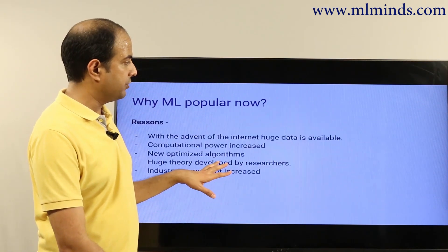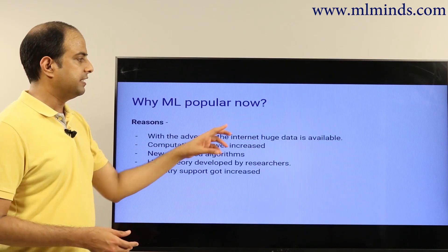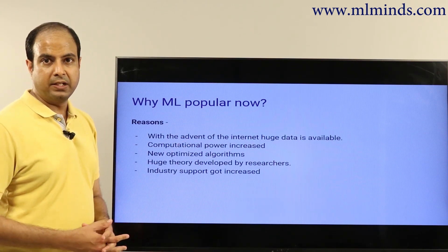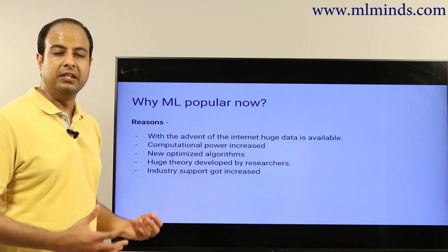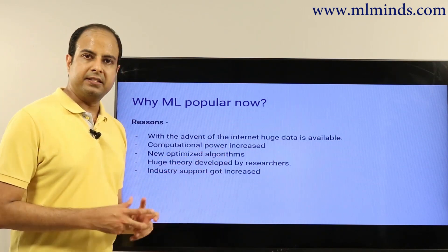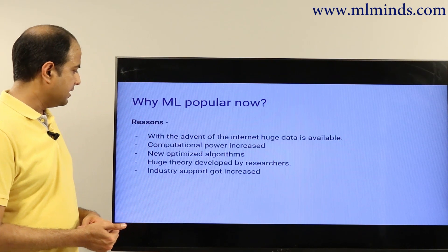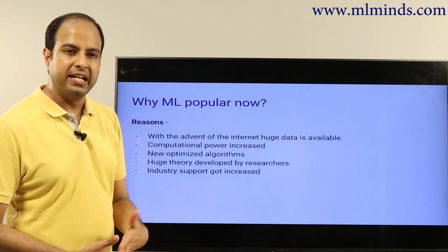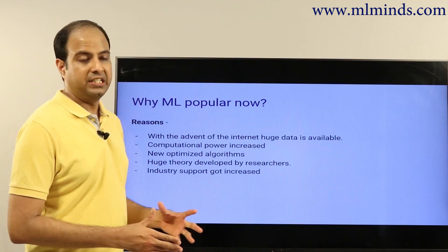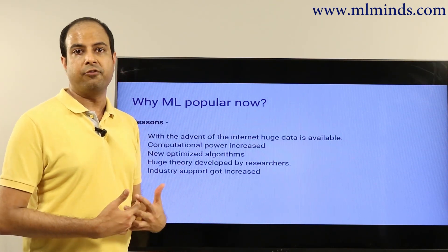To summarize, there are a whole bunch of use cases that require or significantly benefit from machine learning. Machine learning has become popular because of the advent of the internet and huge amounts of available data, a lot of compute power including GPUs, new optimized algorithms and theories developed by researchers, and significantly increased industry funding and support. That is why machine learning is very popular right now — not just because there is a need, but because it has become an integral part of many core processes.